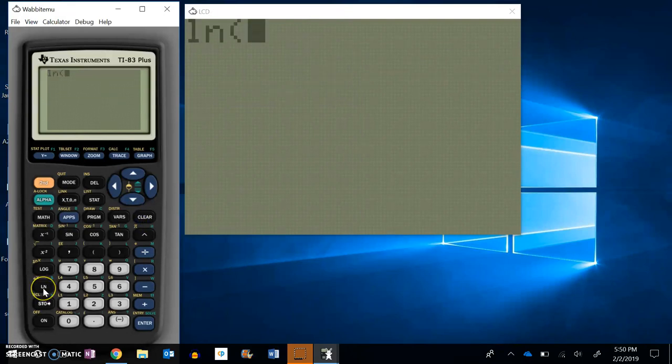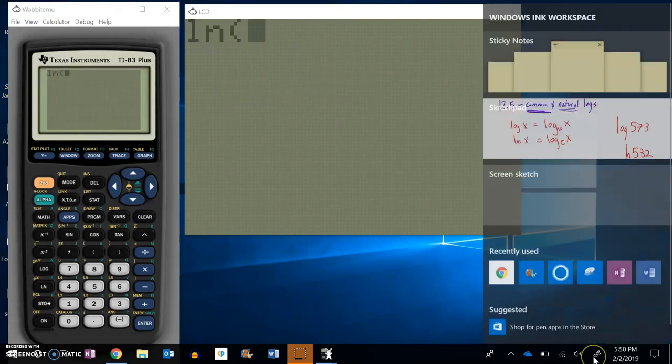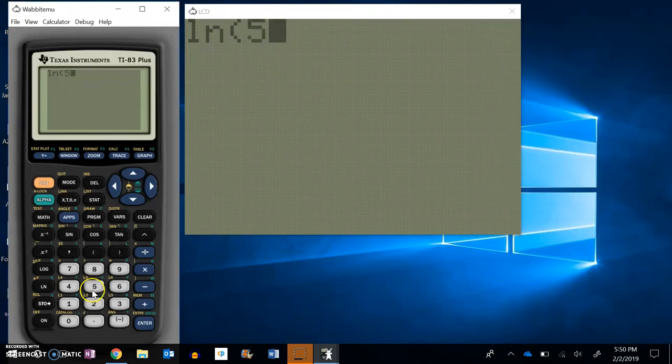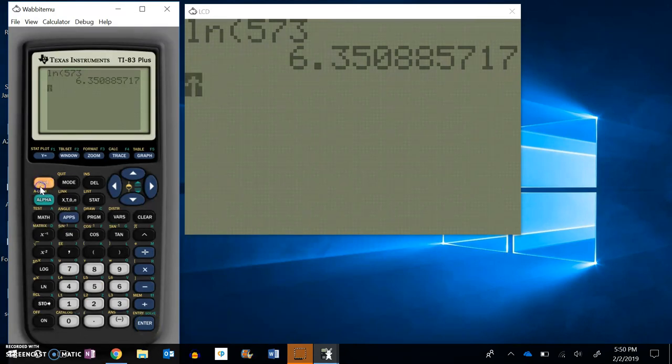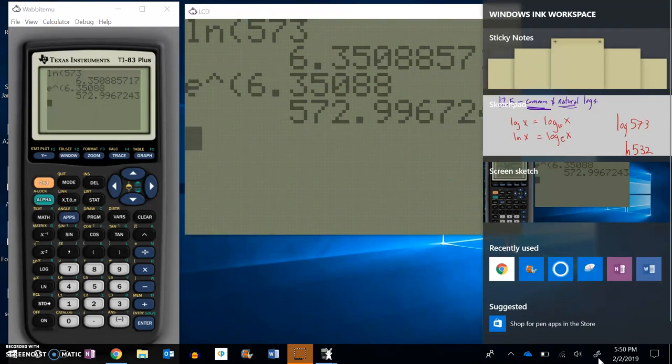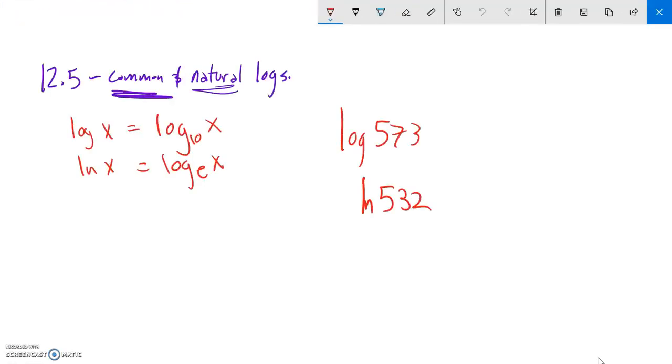I forgot my decimal. So it was natural log of 573. So if I go e to the 6.35088, should be close to 573. Yeah, I do a little rounding because I rounded that off. So that's what those symbols mean.